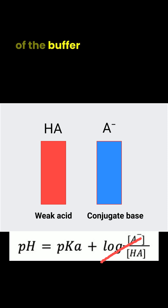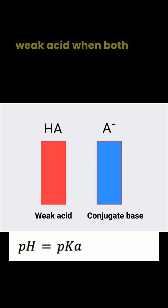That means the pH of the buffer solution is equal to the pKa of the weak acid when both the acid and conjugate base are in equal amounts. If a small amount of acid or base is added, the buffer will work to keep the pH close to that value.